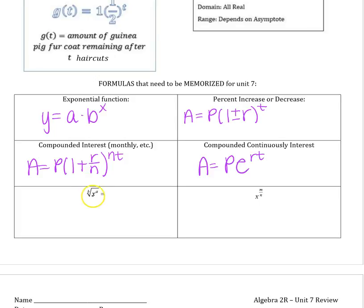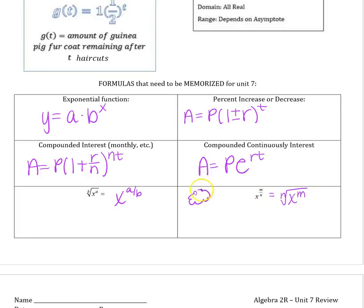You also need to know how to rewrite radicals as fractional exponents. The b-th root of x to the a equals x to the a over b, and going the other way, x to the m over n equals the n-th root of x to the m. The way to remember this: it's always power over root. Think of a tree — roots are at the bottom, so the root goes in the denominator of the fraction.